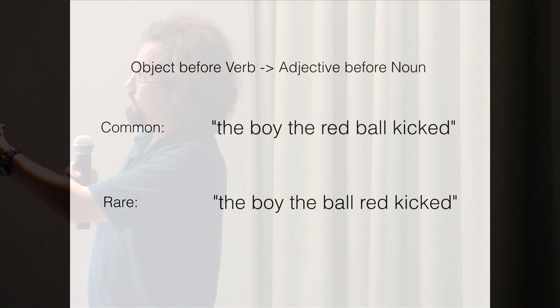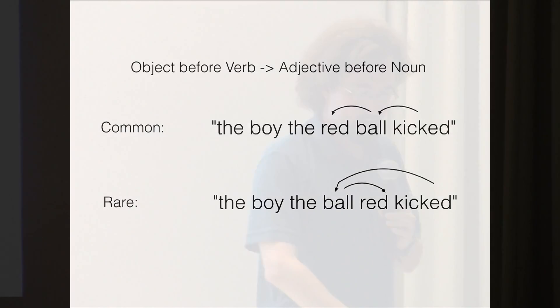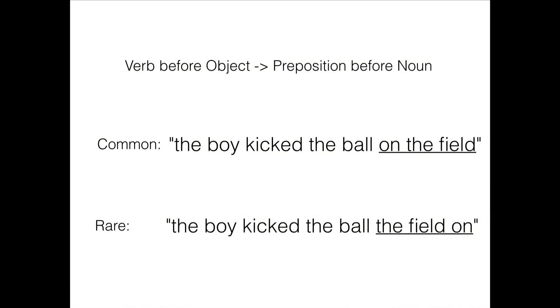The dependency length idea suggests that the word order patterns we see in languages reflect a preference for minimizing dependency length. It's common to have languages where you say 'the boy, the red ball kicked' — short dependencies — and rare to have languages where you say 'the boy, the ball red kicked' — long dependencies. Similarly, in languages where the verb comes before the object, prepositions come before the noun, avoiding long dependencies. This idea, originating in the early 1990s, is that Greenberg's word order universals can almost entirely be explained as dependency length minimization.